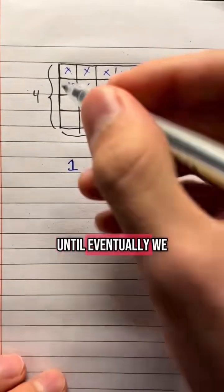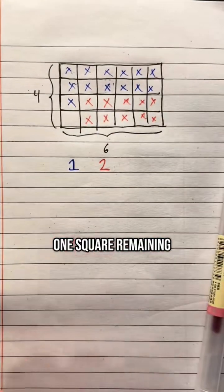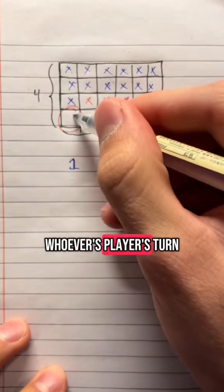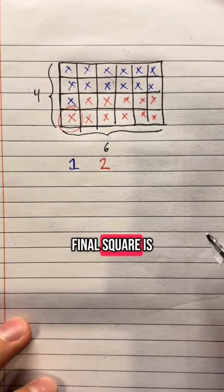Until eventually we find out that there is only one square remaining. And upon there only being one square remaining, whoever's turn it is who picks that final square is the loser.